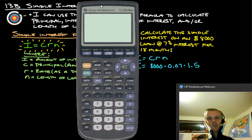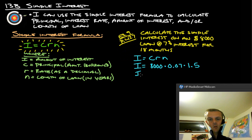So, let's use our calculator to figure that out, and we've got 8,000 times 0.07 times 1.5. Alright? And that gives us 840. So, the simple interest on this $8,000 loan at 7% for 18 months is $840.